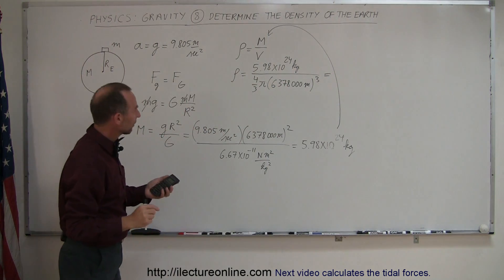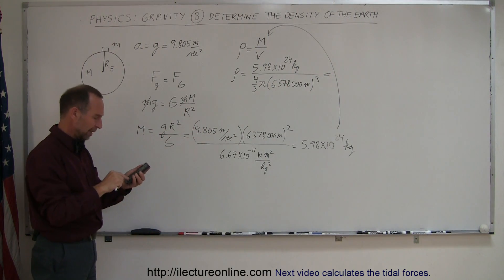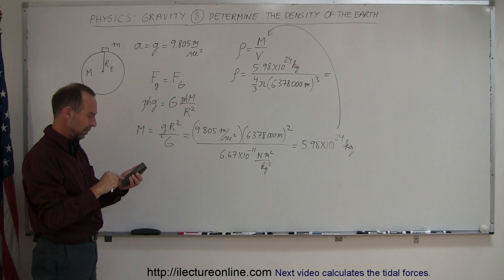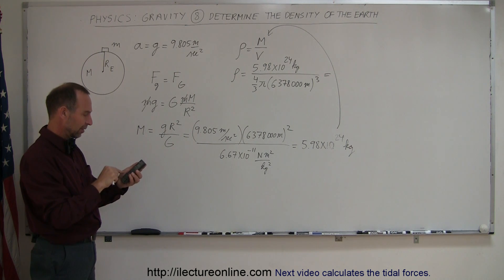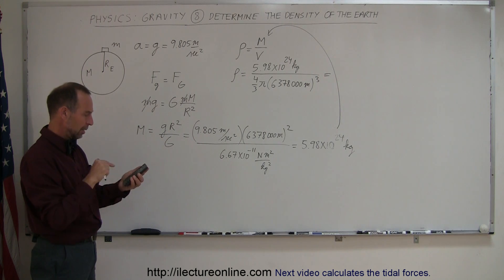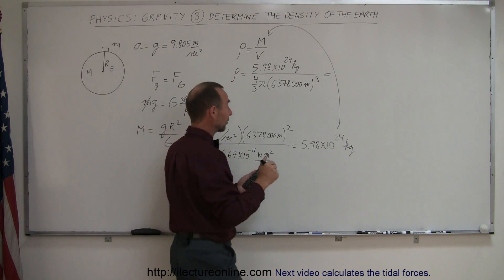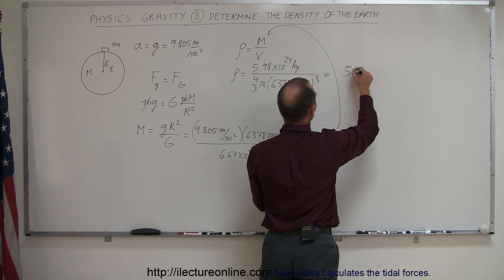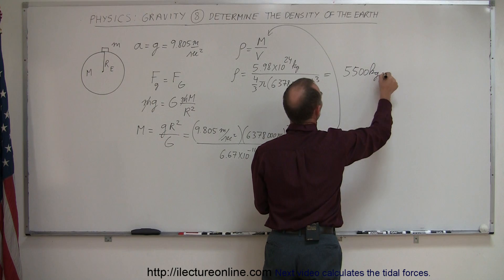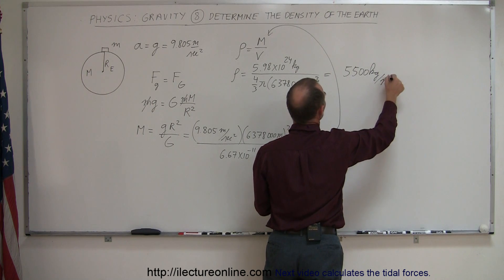Let's see what we get. Dividing by (4/3) times pi and by 6,378,000 cubed, it turns out that it's 5,500 kilograms per cubic meter.